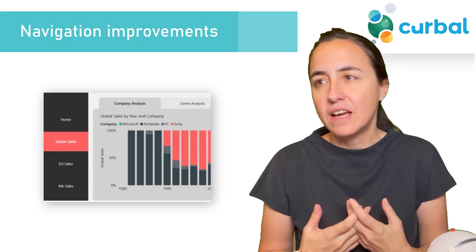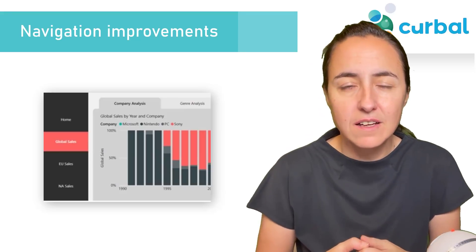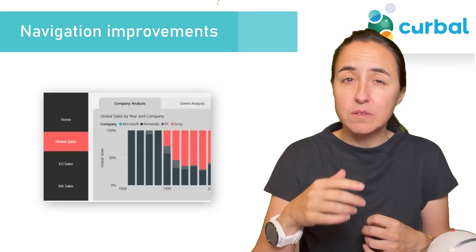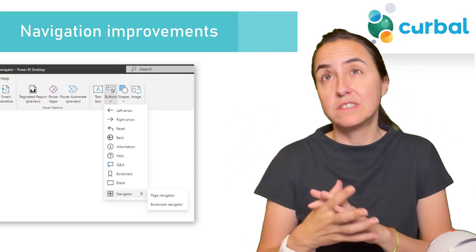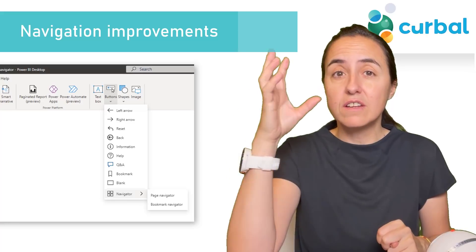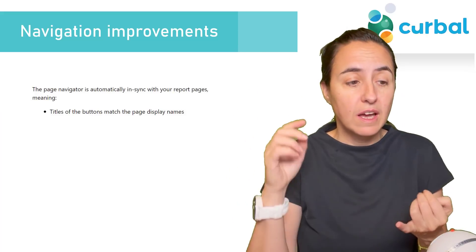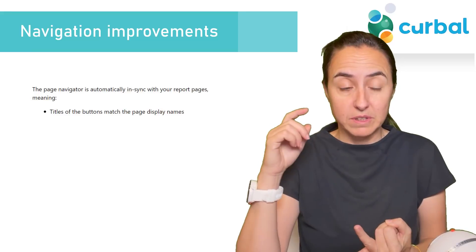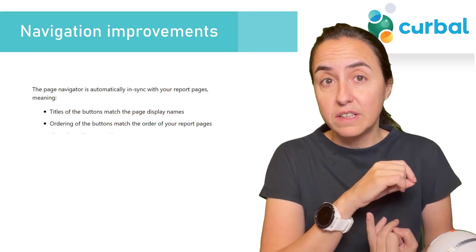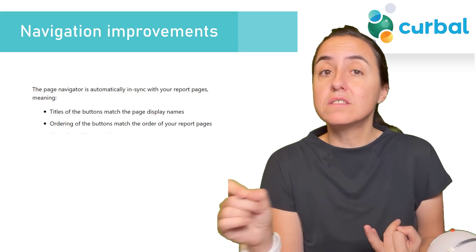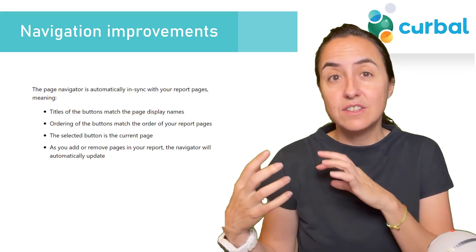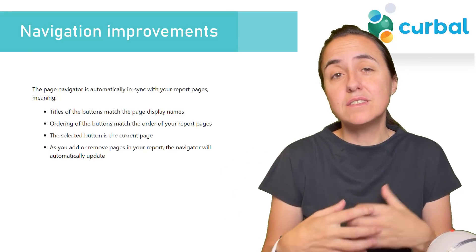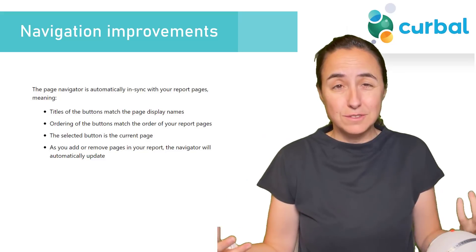The second update is about page navigation and bookmark navigation. It used to take a long time to create page navigation, but they've improved it. The good news is you have a button that will do page navigation — you click on it and it creates the buttons for you. The titles of the buttons will update when they update, the ordering of the buttons will change when you change pages in the report, the selected button is the current page, and as you add or remove pages the navigation will update by itself, which is wonderful.